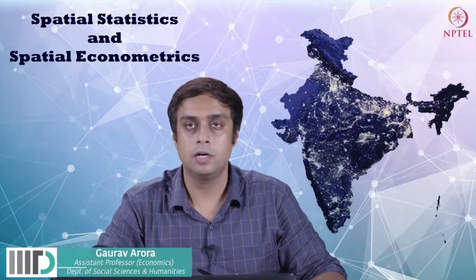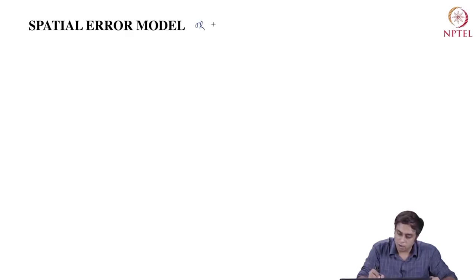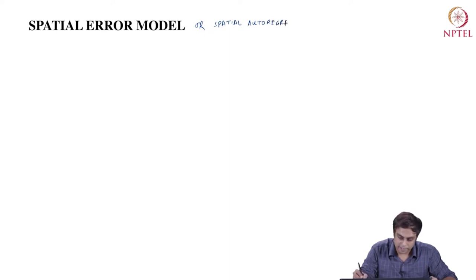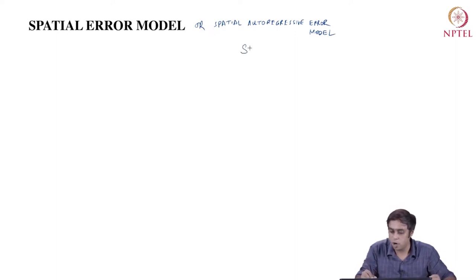Welcome back to the second part of the 19th lecture. We have now seen in detail the spatial lag model, including its interpretations and impact on inference. We are now going to move to the next popular form of a spatial regression model called the spatial error model, or the spatial auto-regressive error model. In short, it is called the SAR model.